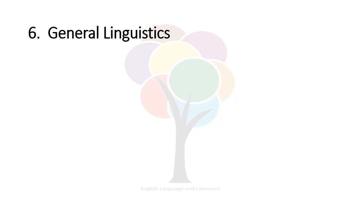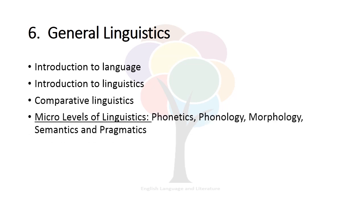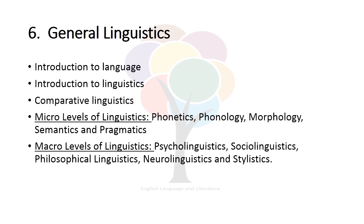Apart from English literature, you should prepare General Linguistics — it is the course of general linguistics and not specific linguistics. General linguistics is the study of phenomena, history, and functions of language without restriction to a particular language or aspect. In order to prepare general linguistics, you should study Introduction to Language, Introduction to Linguistics, Comparative Linguistics, and the microlevels of linguistics including Phonetics, Phonology, Morphology, Semantics, and Pragmatics, as well as macrolevels of linguistics including Psycholinguistics, Sociolinguistics, Philosophical Linguistics, Neurolinguistics, and Stylistics. You need not go into details — just go through these topics of general linguistics.